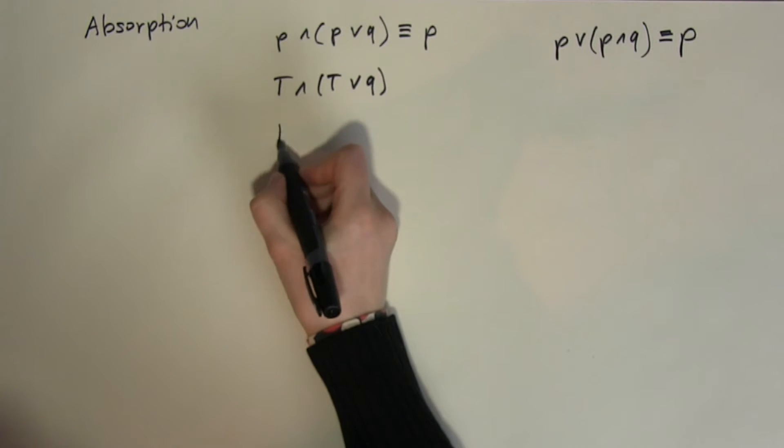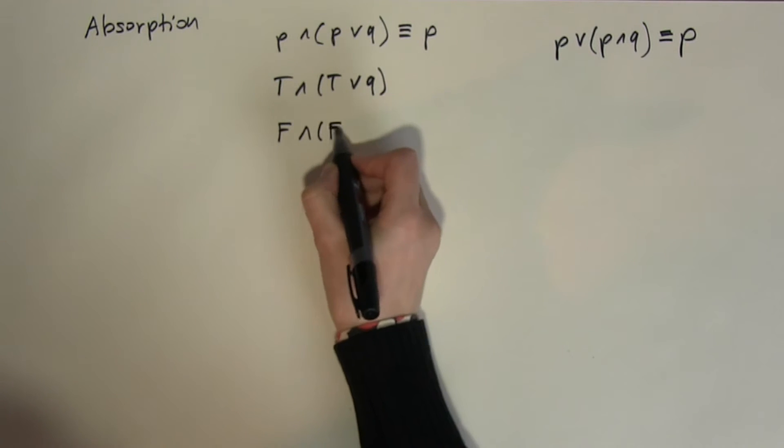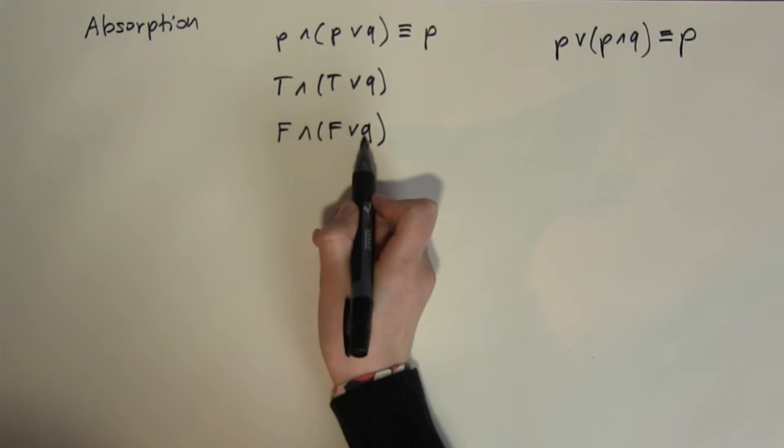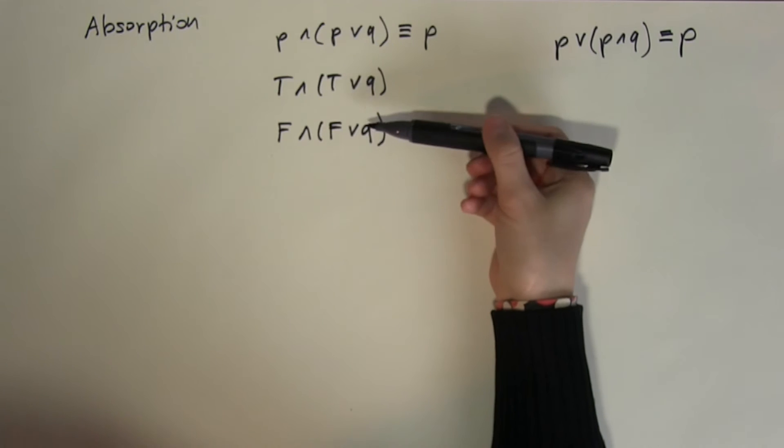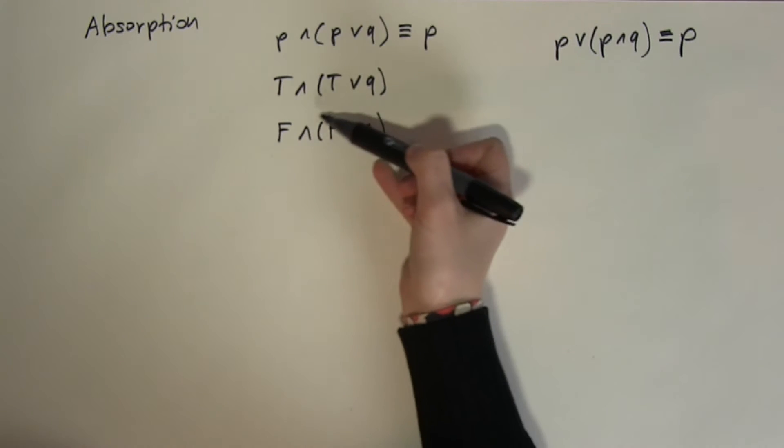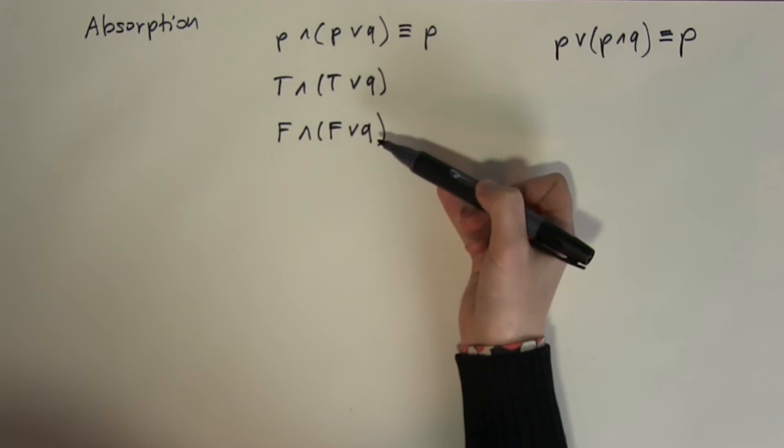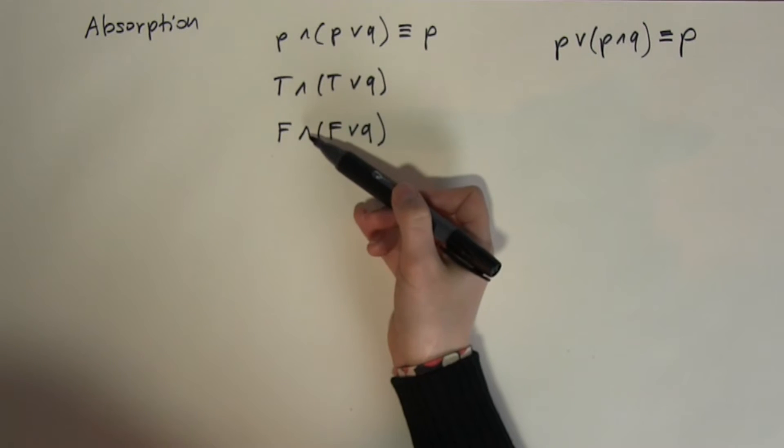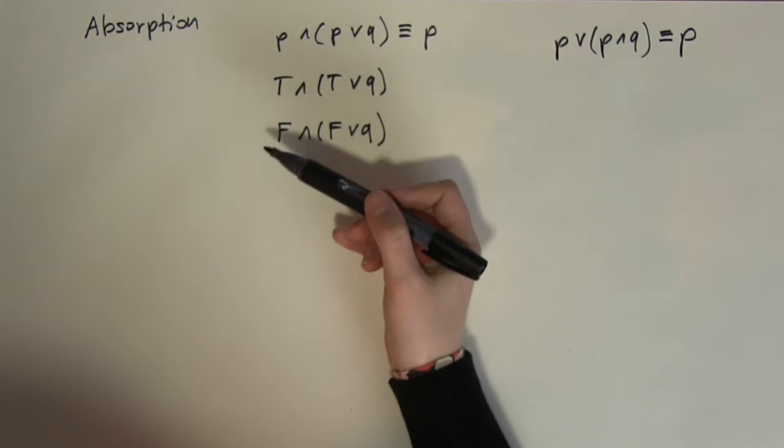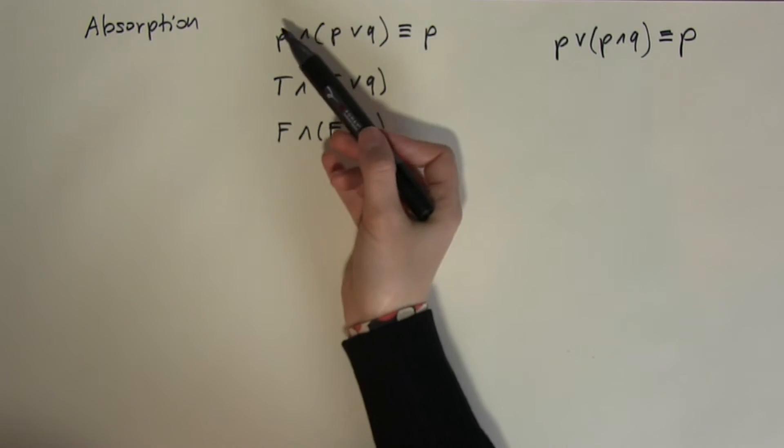But what happens if I have got a false in here? Now false or Q, that will give me Q back. Because if Q is true, I have true in here. But if Q is false, I have false in here. But false and anything is always going to be false. Because the AND gate, remember the AND operation is only true if both of them are true. So that's why this is always giving me back P.